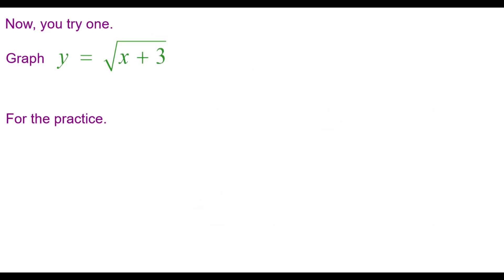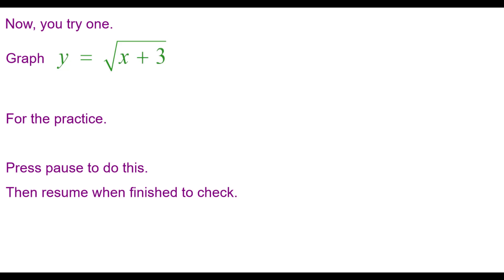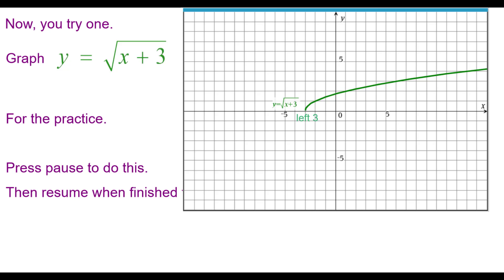Now you try one. Graph y equals the square root of the quantity x plus 3 for practice. Press pause to do this and then resume to check your answer. Here is the graph: it's the square root function shifted entirely to the left three units, because of the plus 3 inside the square root function.